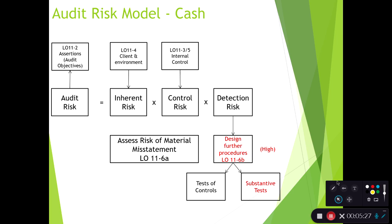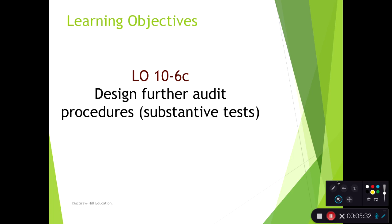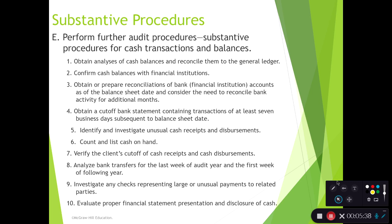Looking at substantive testing for cash: we can look at cash balances in terms of how they're changing and reconcile those to the general ledger. Confirmations is a big one — we're actually going to go communicate directly with the banks as the auditor and have them confirm all the different accounts our client has with them. That's a really important procedure, probably one of the best, at least for existence of cash. We'll also look at bank recs that were done and possibly prepare our own version to make sure bank accounts were properly recorded.